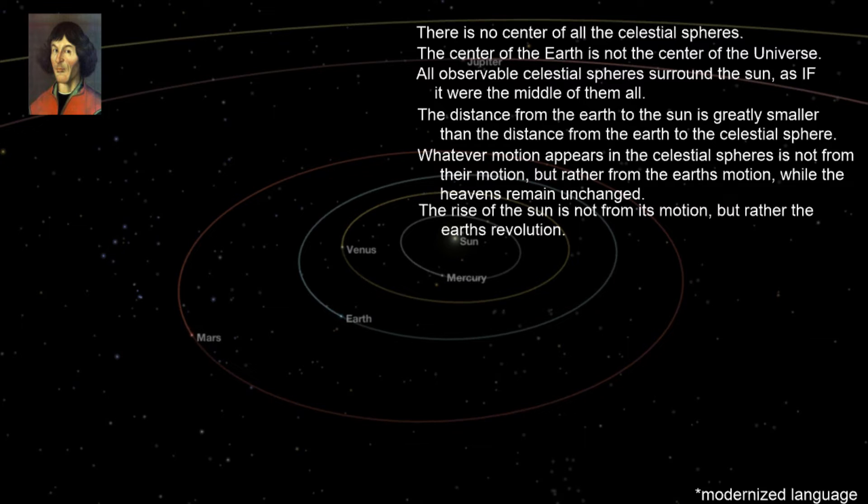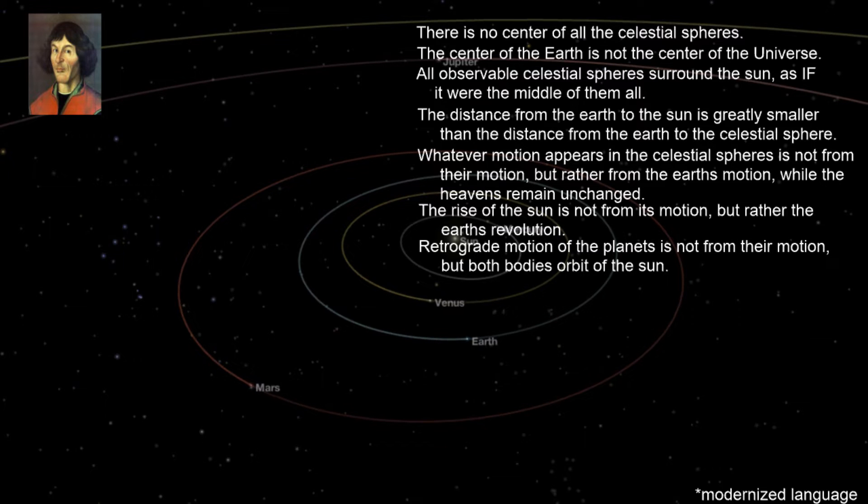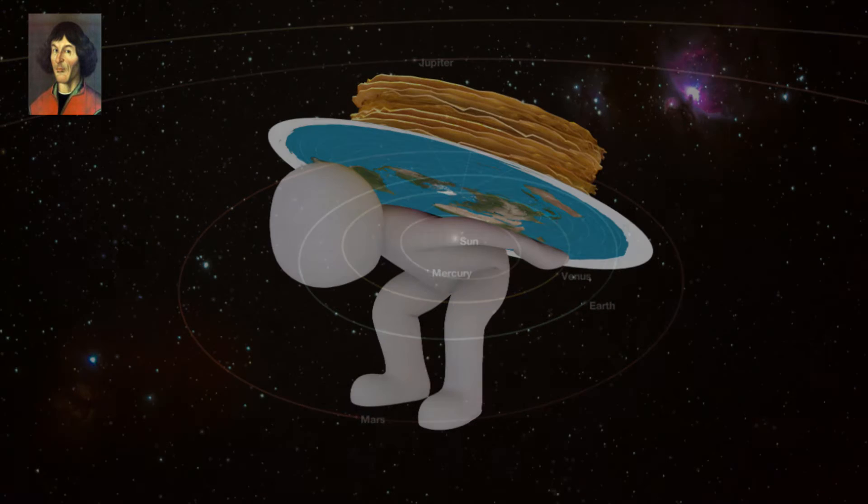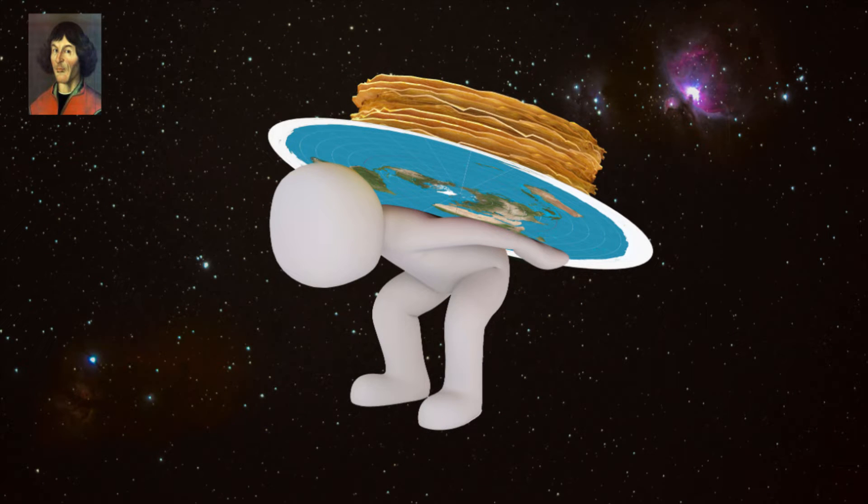The rise of the sun is not from its motion but rather the Earth's revolution. Retrograde motion of the planets is not from their motion but both bodies' orbit of the sun. These beliefs shook many astronomers to their core because it called into question the ancient supposition that the Earth and man were the center of everything.